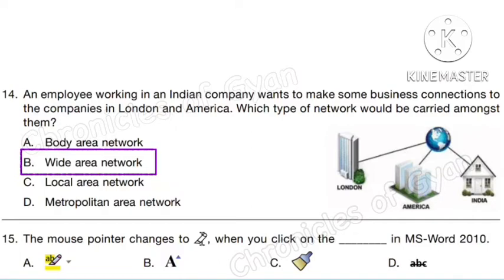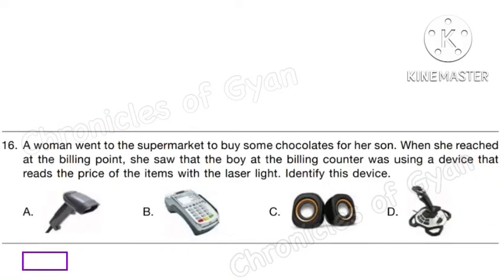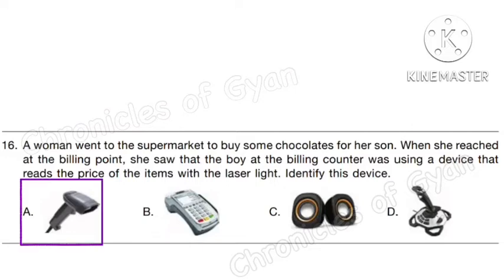Question 15. The mouse pointer changes to this icon when you click on the blank in MS Word 2010. Correct answer is option A. Question 16. A woman went to the supermarket to buy chocolates for her son. When she reached the billing point, she saw the boy at the billing counter using a device that read the price of items with laser light. Identify this device. Correct answer is option A: barcode reader.